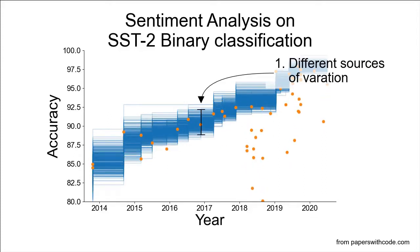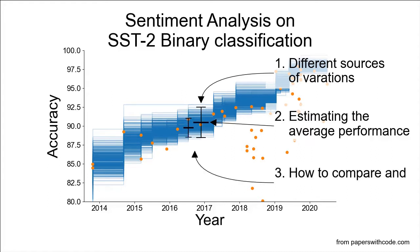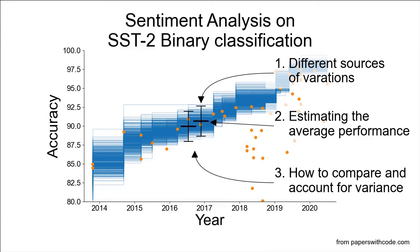Question 1: What are the different sources of variation and which are most important? Question 2: How can we estimate reliably the average performance? Question 3: How should we compare algorithms and account for variance?